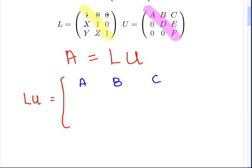For the second row, we have X, 1, and 0. So X times A plus 1 times 0 plus 0 times 0 is just AX. Then X times B plus 1 times D gives BX plus D. And finally, CX plus E.